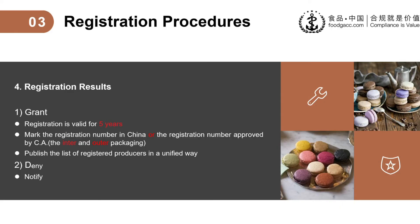The validity period of the registration is 5 years. Importantly, you must mark the registration number in China or the registration number approved by your CA on the inner and outer packaging of food exported to China. GACC publishes the list of registered producers in a unified way. Rather than risking a failed registration and entry into the Chinese market, it is better to comply with the relevant requirements from the very start. We can help you to get the registration, as we assist global companies to obtain registration from GACC.